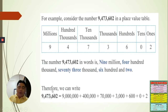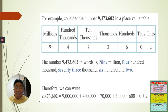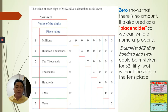You can also write this number in staggered or itemized form: nine million, four hundred thousand, seventy thousand, three thousand, six hundred, zero, and two. Adding these together gives you nine million, four hundred seventy-three thousand, six hundred two. This is the same place value as shown in the previous slide.